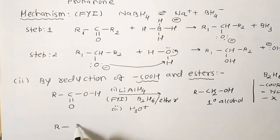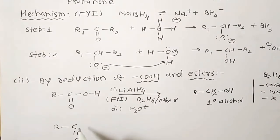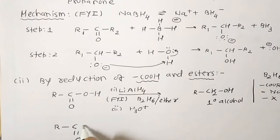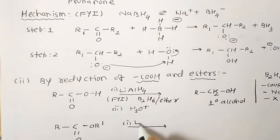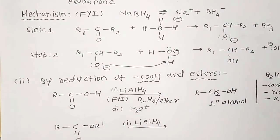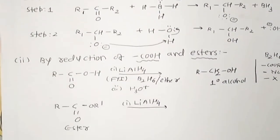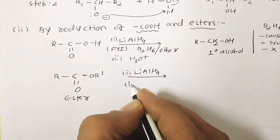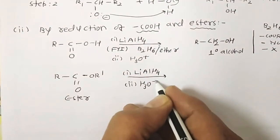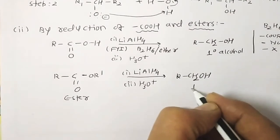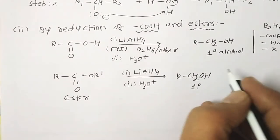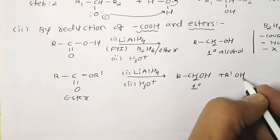Now for the ester example. In the case of an ester R–C(=O)–O–R′, the same approach applies: step one is lithium aluminium hydride, step two is H₃O⁺. It gives a primary alcohol RCH₂OH plus R′OH, which is also a primary alcohol.